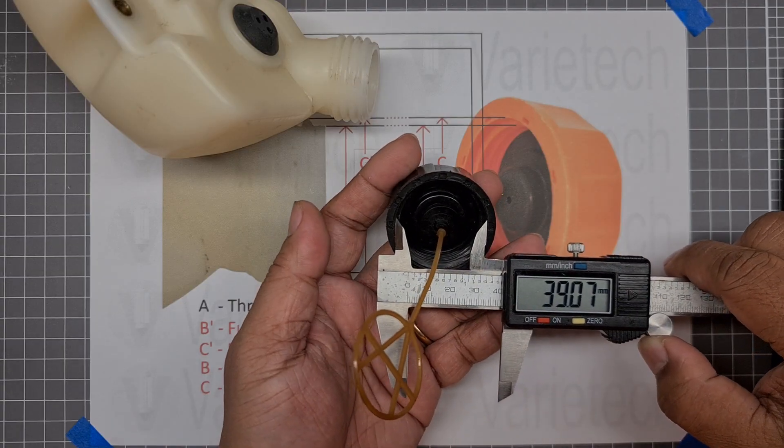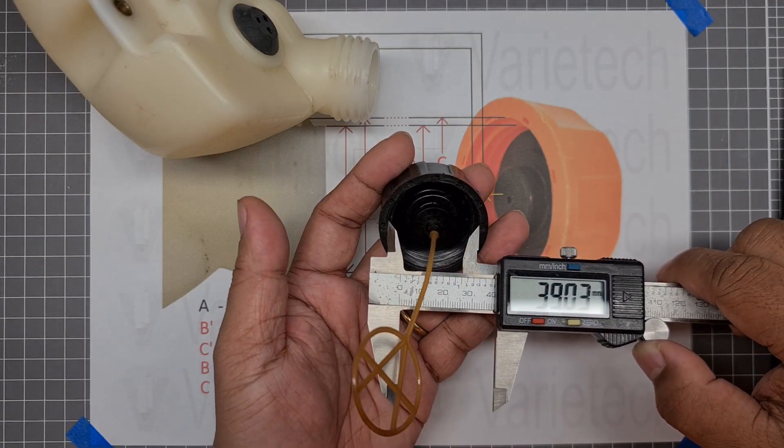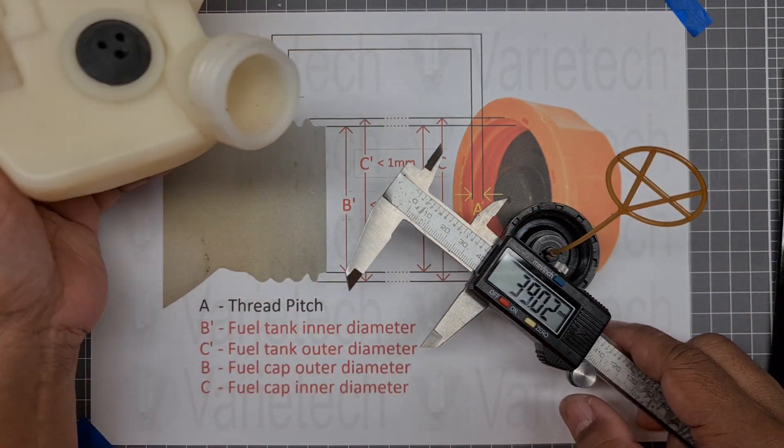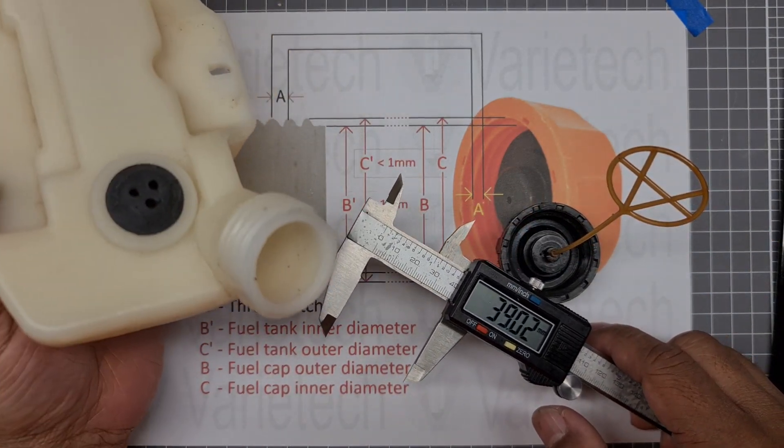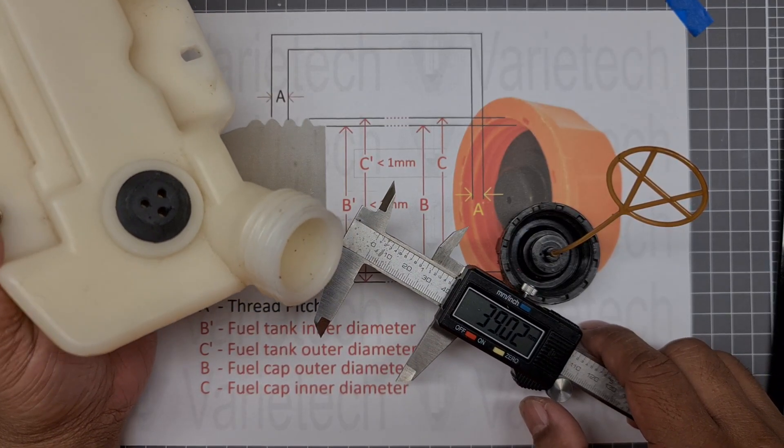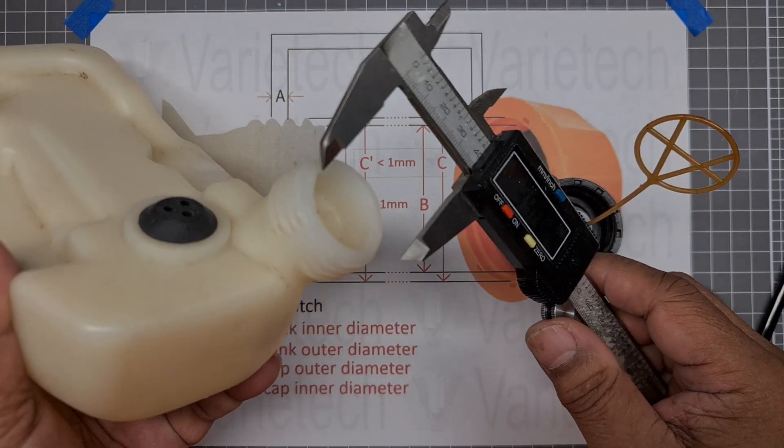That's about 39. So what would be the outer diameter of your fuel tank? That would be one millimeter less, isn't it? So should be around 38 millimeter. So we measure from here... so that's about 38.